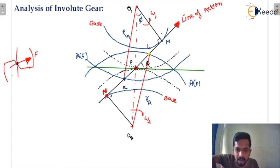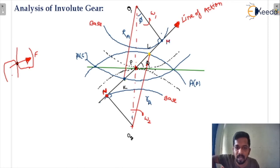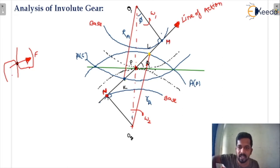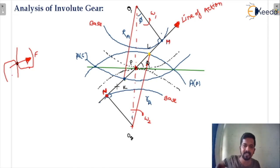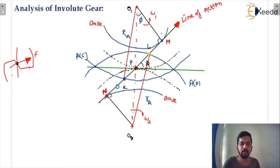You can see there is a point M and there is a point N. This is point M and this is point N. So this is the line of action which is passing through the pitch point as well as it is tangent to the base circle.